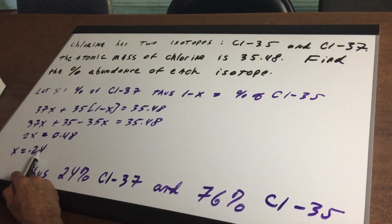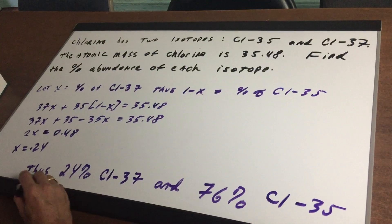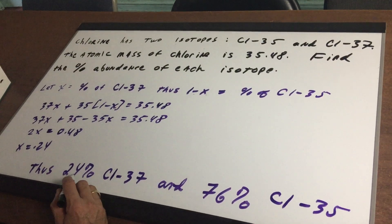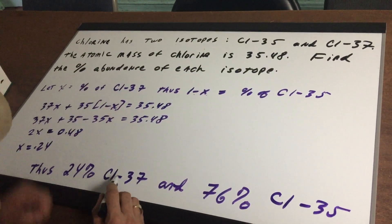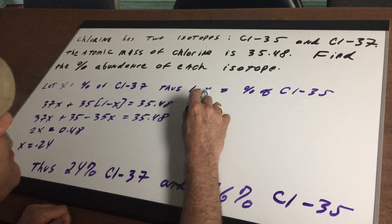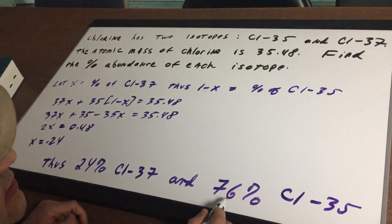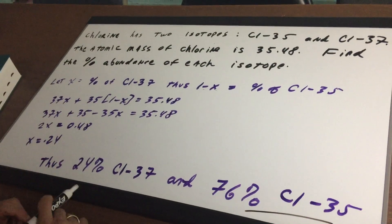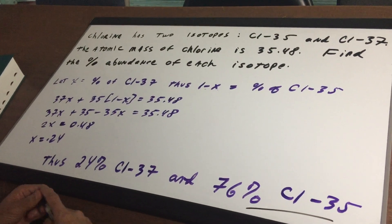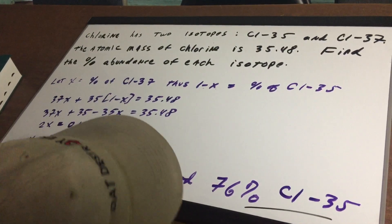If you multiply it by 100, you convert it into percents. So X is 24 percent and that's the 37 isotope, and 1 minus 0.24 gives you 0.76 or 76 percent for the percent of the Cl-35 isotope.